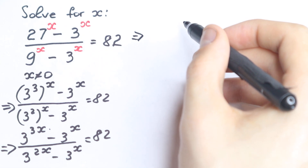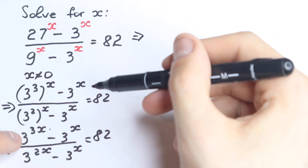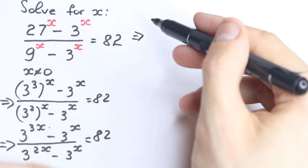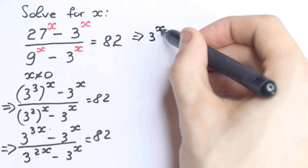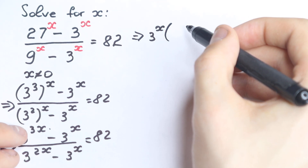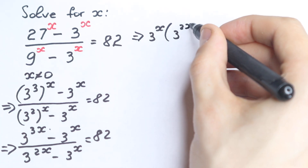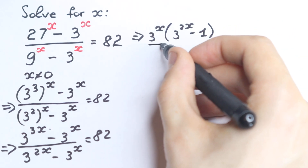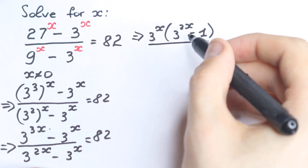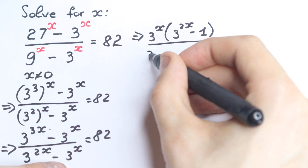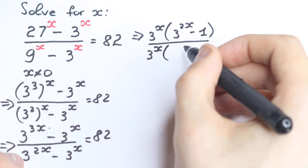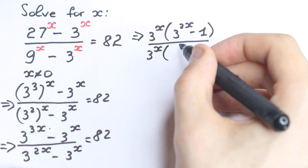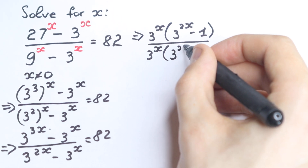Third and really interesting step. In the numerator we have 3 to the power 3x, which is 3 to the power x three times, and we also have one 3 to the power x, so we can factor out 3 to the power x, leaving 3 to the power 2x minus 1 in parentheses. In the denominator we do the same thing — we factor out 3 to the power x, leaving 3 to the power x minus 1.